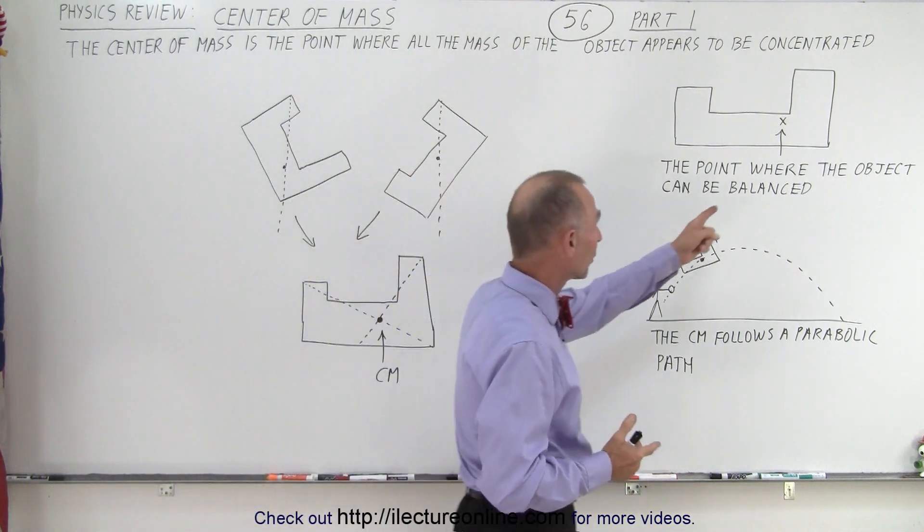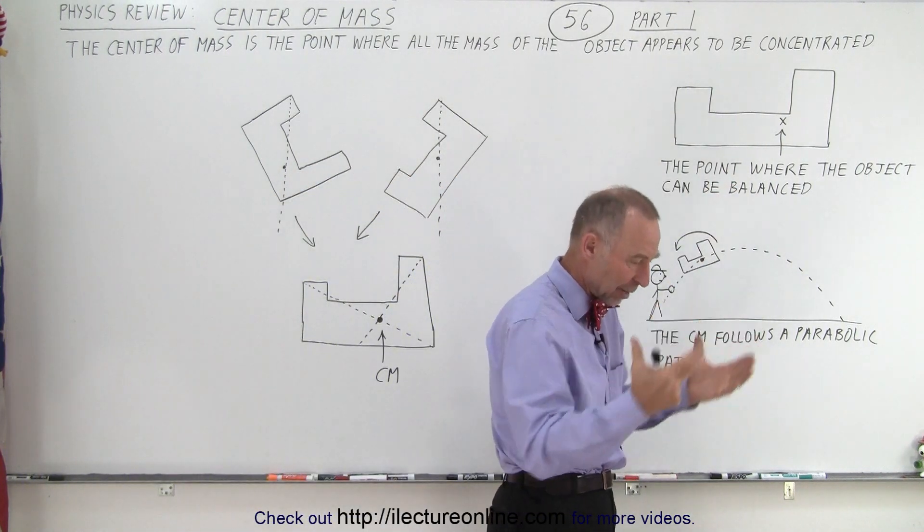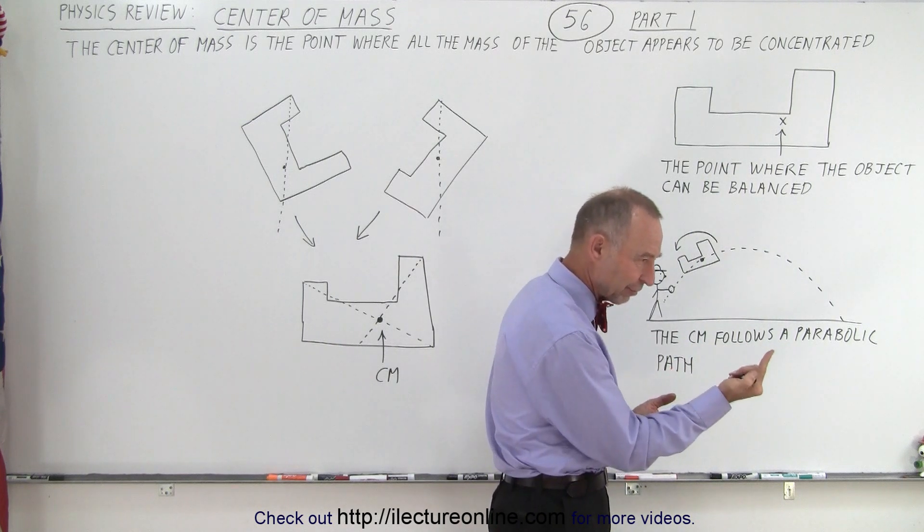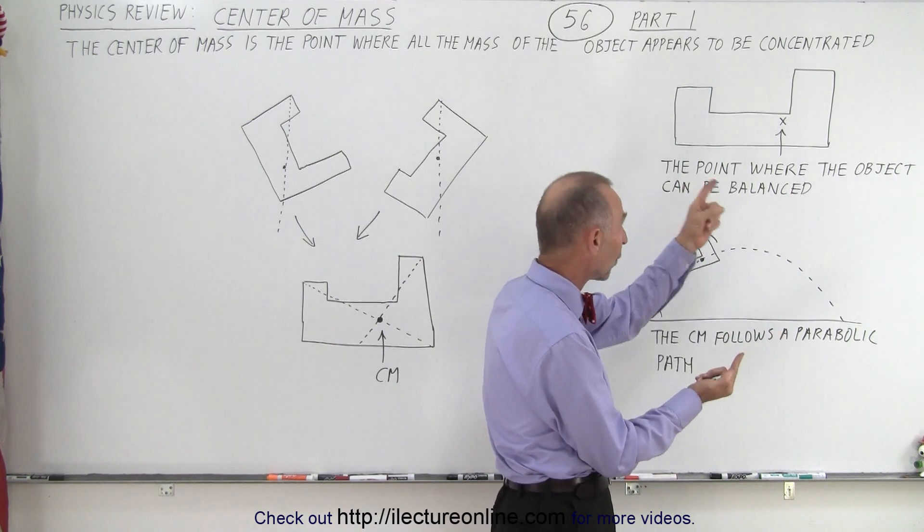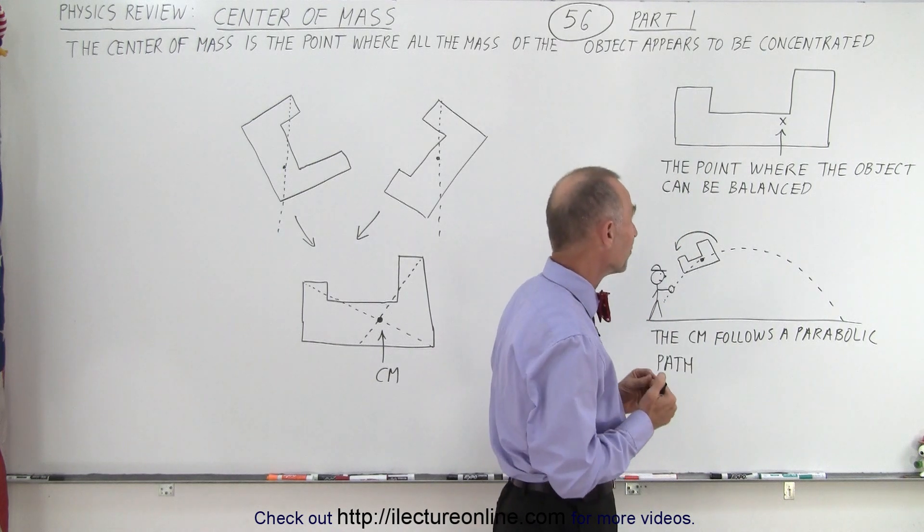It's also considered the point where the object can be balanced. So, we have an object of an odd shape. You can put your finger right there and balance the object right when your finger is right below the center of mass.